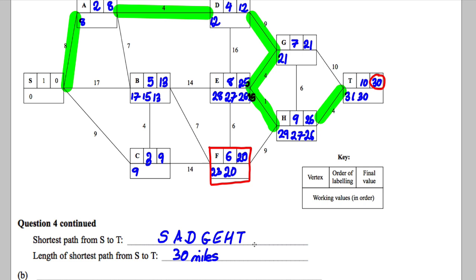The way I would think about doing this, if she must include F, I would ask myself the following question. I would say, how can I get to F the quickest? And then how can I get from F to T the quickest?